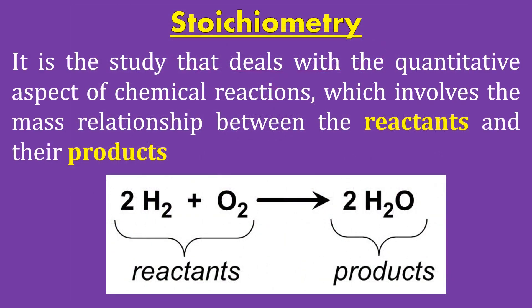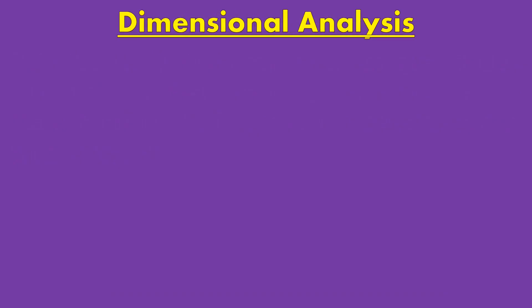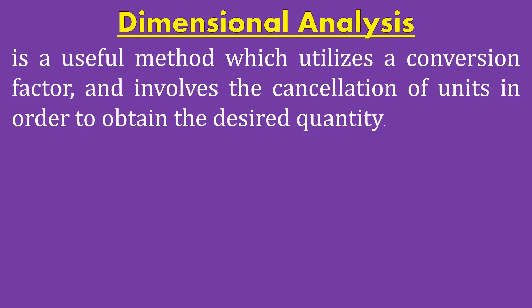Stoichiometry is the study that deals with the quantitative aspect of chemical reactions, which involves the mass relationship between the reactants and their products. The equation describes the burning of hydrogen gas to form liquid water. Chemical equations show the formulas for the substances that take part in the reaction. Dimensional analysis is a useful method which utilizes a conversion factor and involves the cancellation of units in order to obtain the desired quantity.